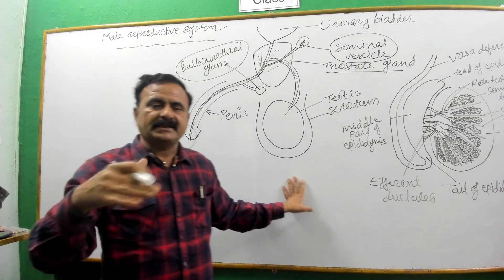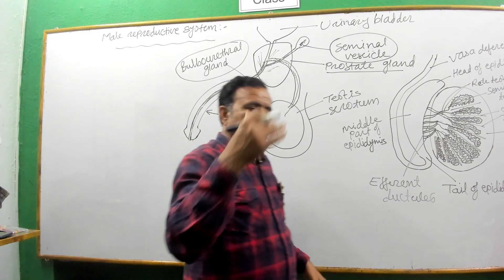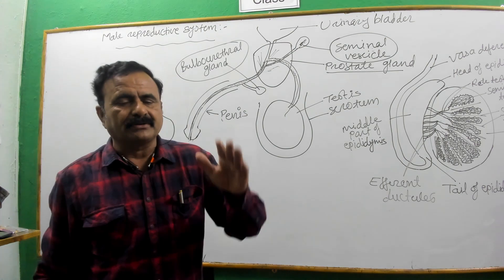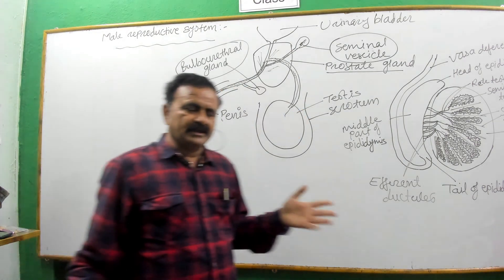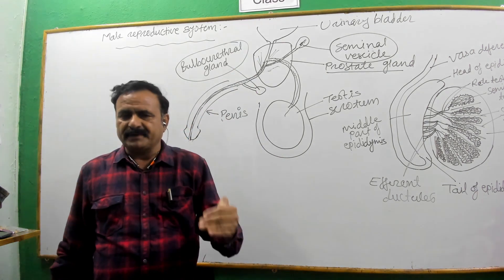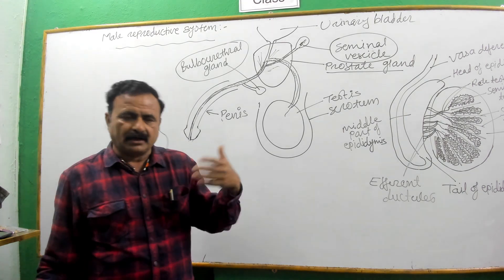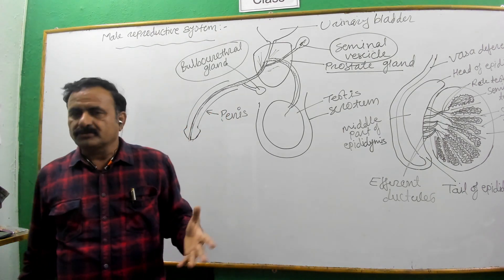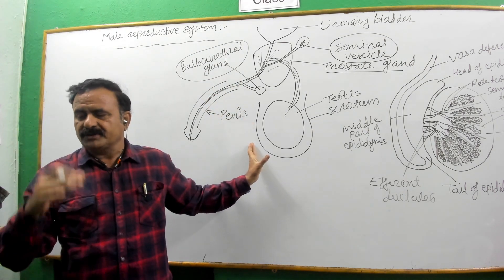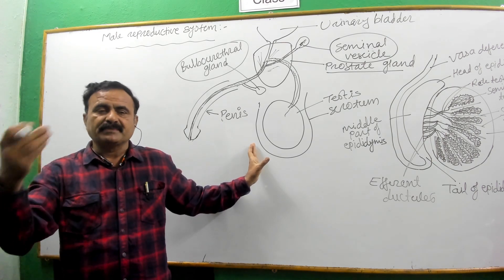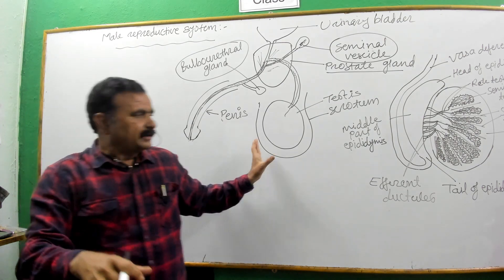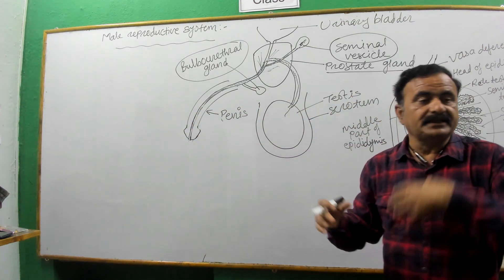The testes are present outside the body of the male because sperm cells require a lower temperature for their growth and development. The normal human body temperature is approximately 37 degrees Celsius, and 37 degrees Celsius is somewhat harmful for the growth and development of sperm cells. That is why the scrotum, in which the testes are present and where sperm cells are produced and temporarily stored, is located outside the body.